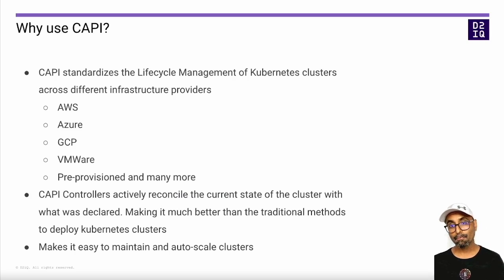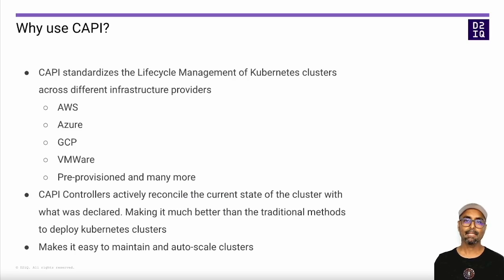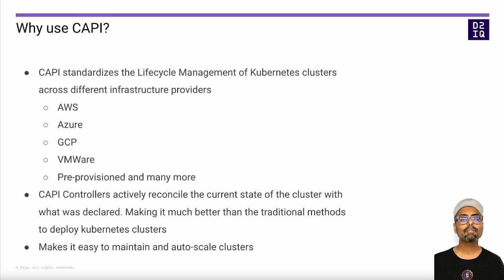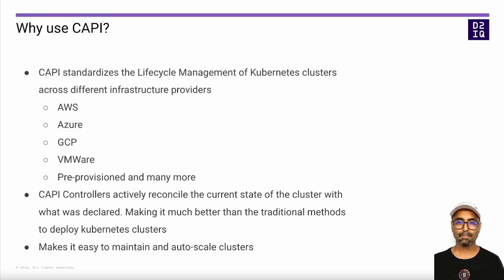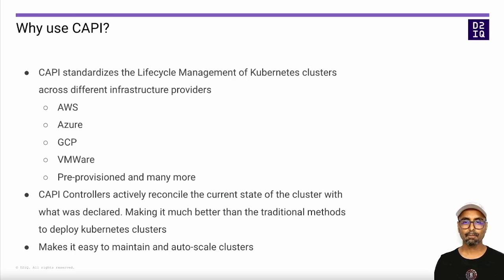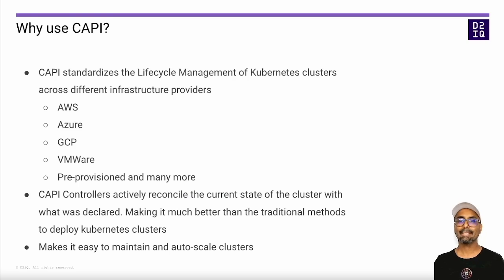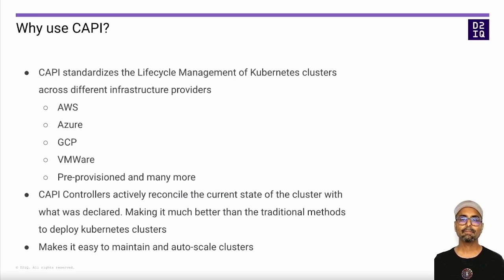Just like components like CSI and CNI standardize the storage and network interfaces across different providers, the CAPI community is very active and continuously adding new features and support for more infrastructure providers, allowing you to keep up with the pace of a rapidly changing technology landscape. So you can focus more on your applications and workloads rather than worrying about being left behind on an obsolete platform.